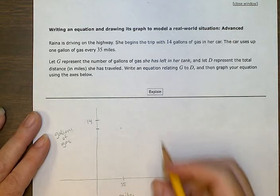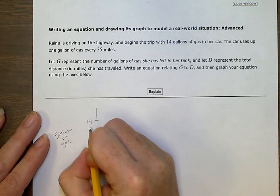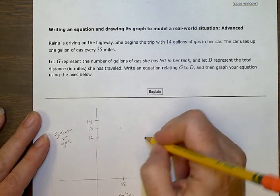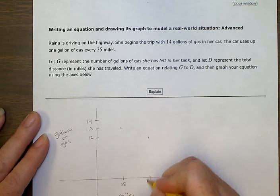And then to go down to 12, she'll drive another 35 miles. So 35 plus 35 is 70.